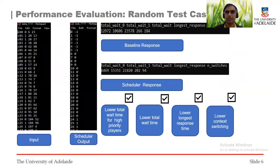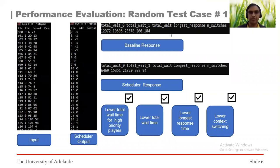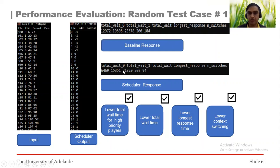This is the performance evaluation for the test cases. This is random test case one, which was given in the assignment. As you can see, our scheduler has passed all the tests successfully with a significant margin. The number of context switches are reduced to almost half, which is a great achievement. The total longest response time is reduced, total wait time is also reduced, and total wait time for higher priority players is reduced to almost half.